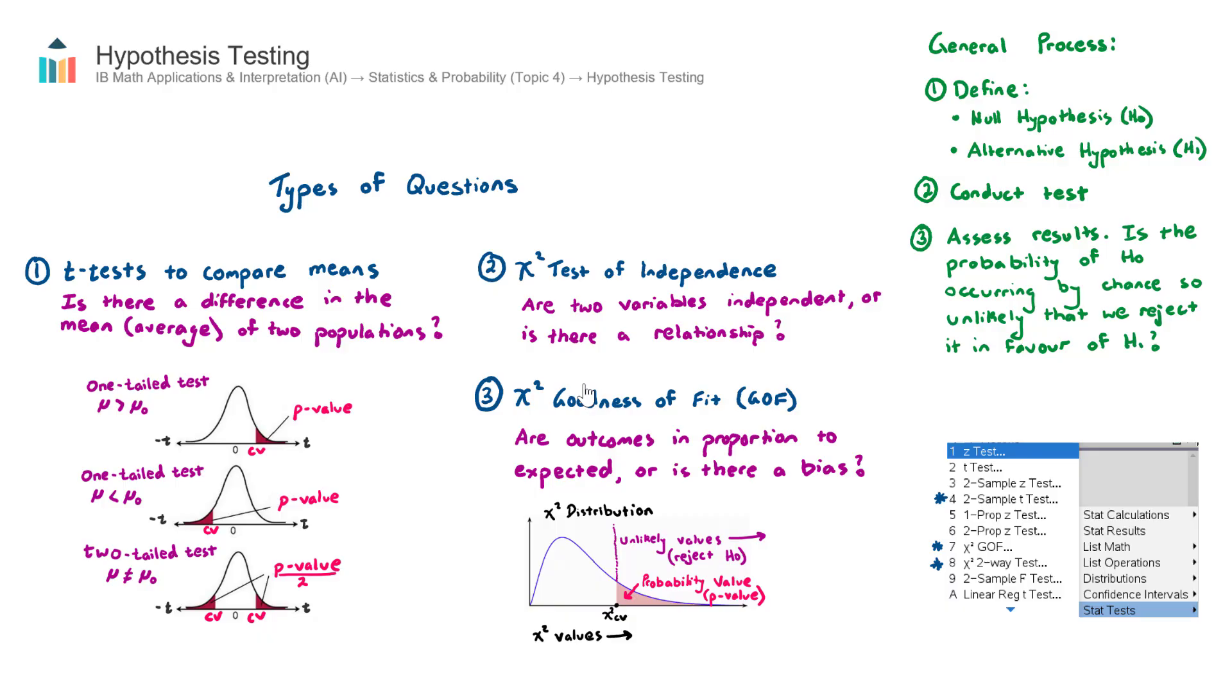Usually it's 5% or 10%. So if the probability is less than the significance level, that's the point at which we go, okay, it's too unlikely for this to occur. I'm going to reject the null hypothesis in favor of the alternative hypothesis. So that's the general process there.